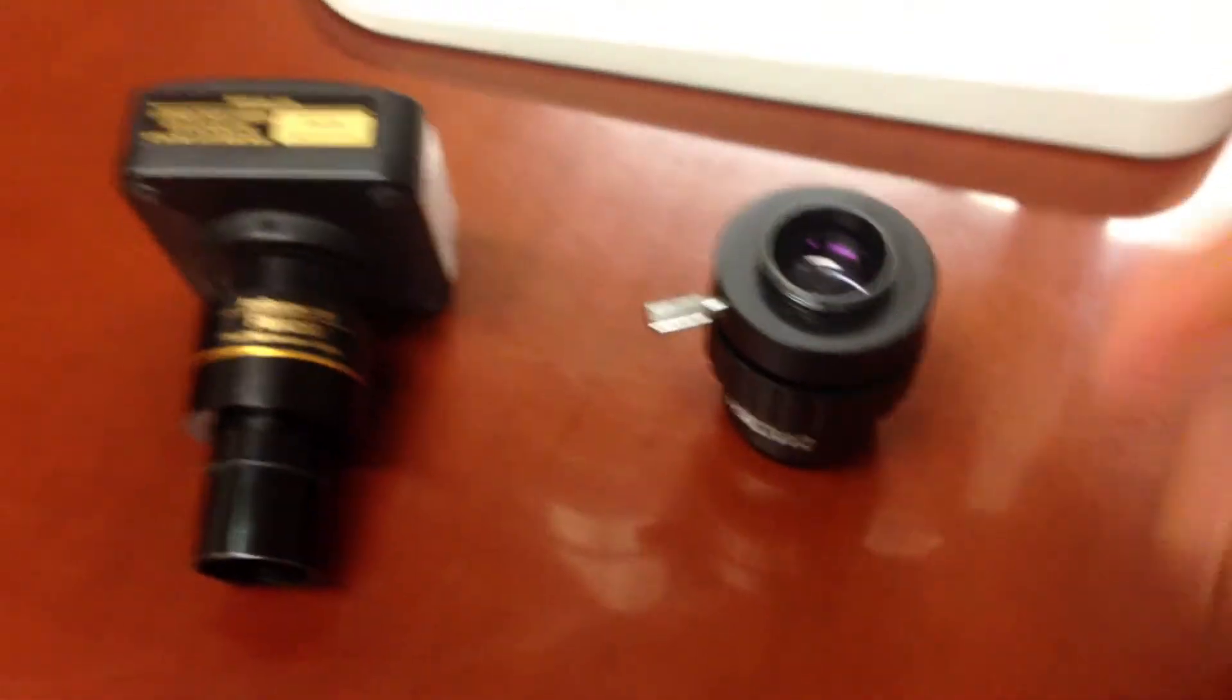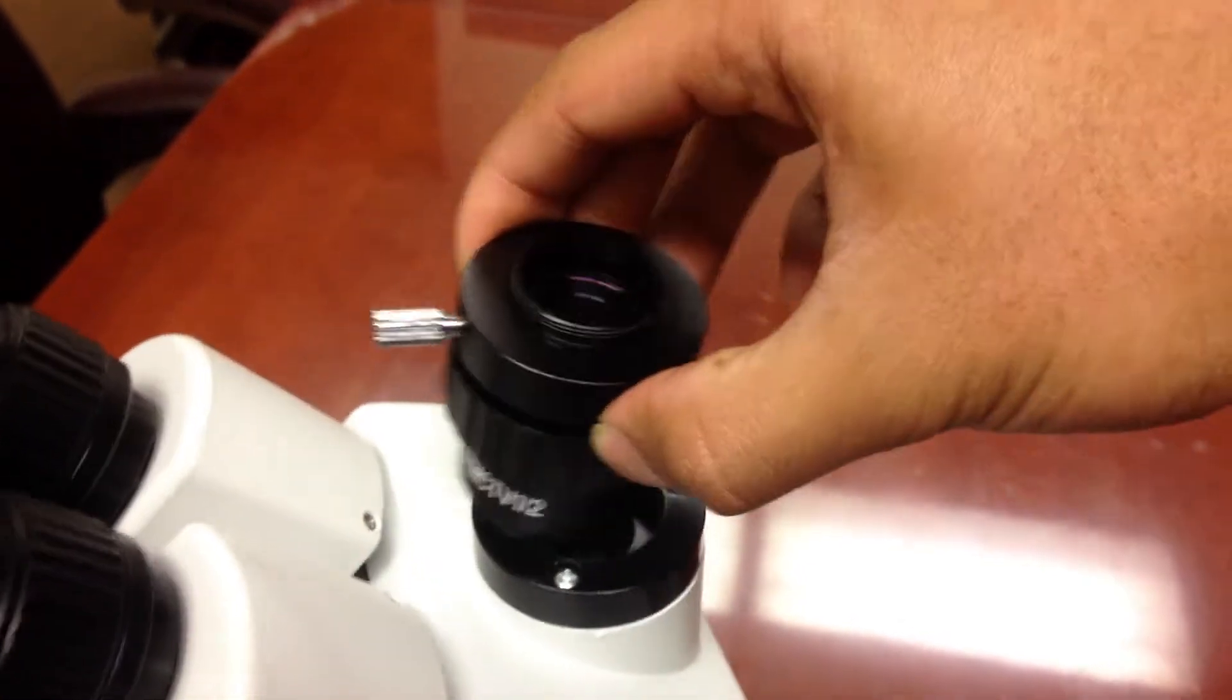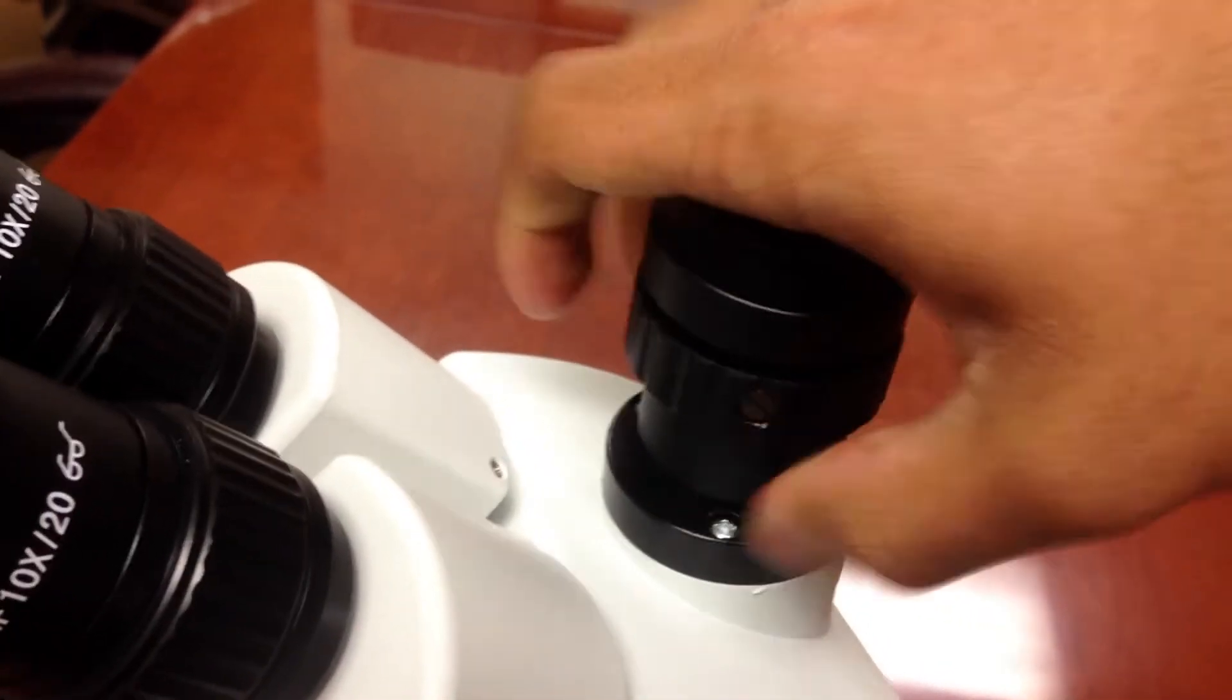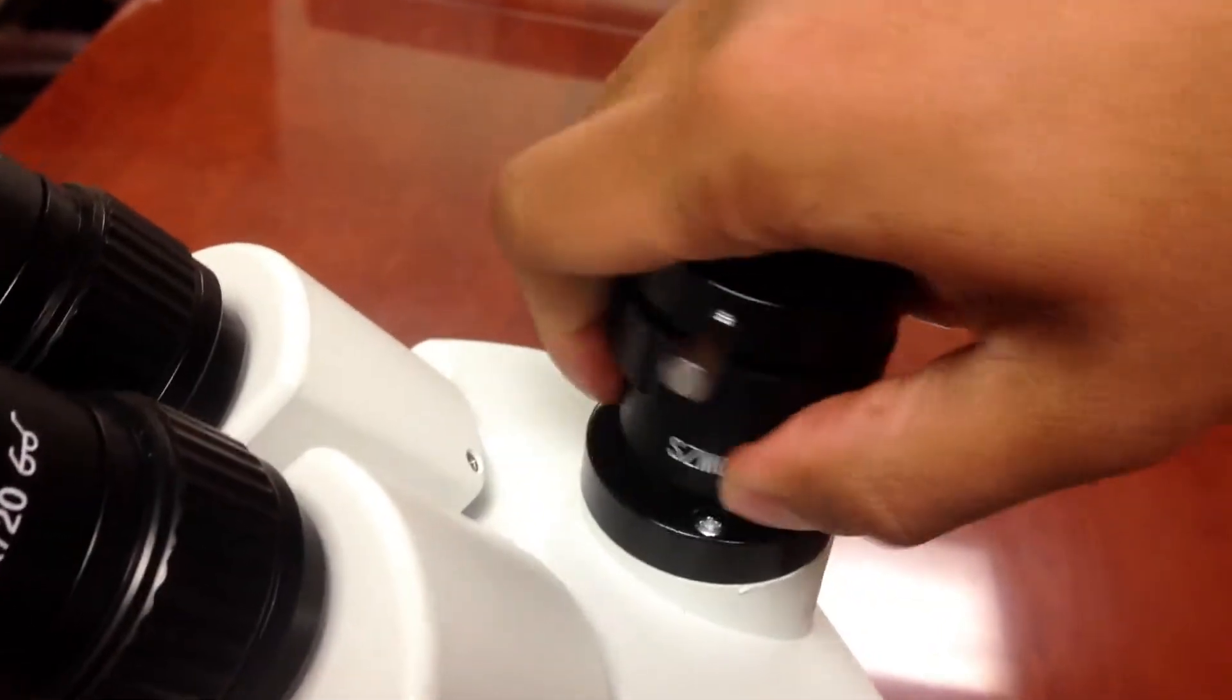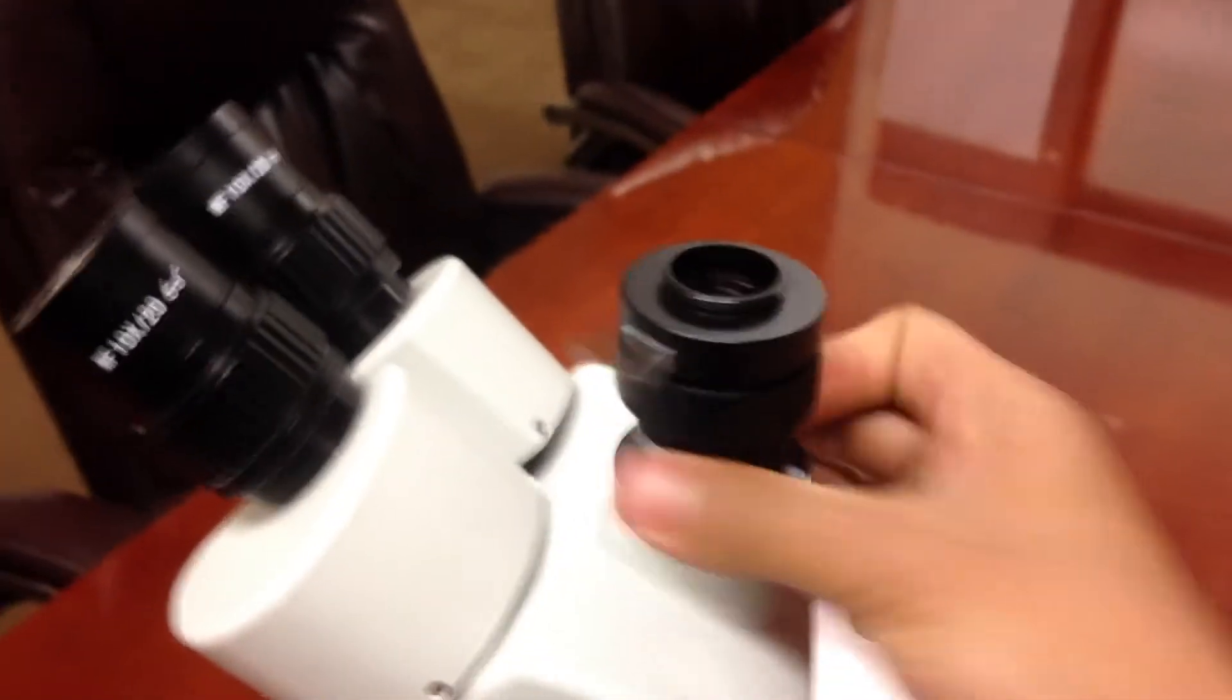And then you're going to go ahead and get the AD-C20 adapter. And as you can see, there are threads at the bottom and on the top. So what you're going to do is just screw this on. Sorry, it's kind of hard doing this with one hand. There you go. Screwing on.